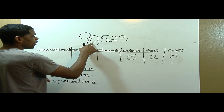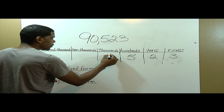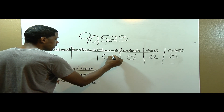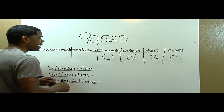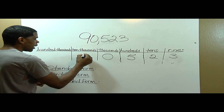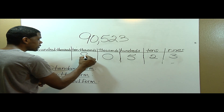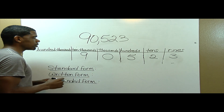How many thousands do I have? Notice I have zero, so I'll place the number zero for thousands. How many ten thousands do I have? I have nine, so I'll write nine in the ten-thousands place.